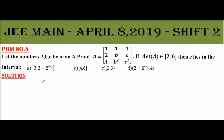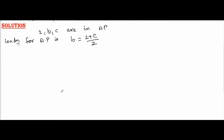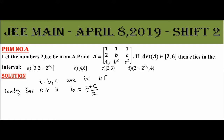First, the numbers 2, B, C are in AP. The condition for arithmetic progression is that the middle number B equals (2 + C) / 2. This is from lower classes — if you learned numbers in arithmetic progression, this is the condition.